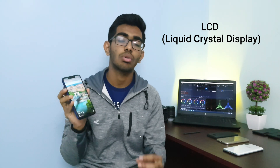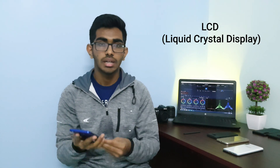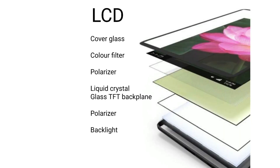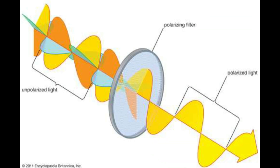LCD stands for liquid crystal display. An LCD display has a lot of layers stacked on top of each other. On the back there is a backlight that produces white LED light, which passes through the liquid crystals and a bunch of polarizers and filters, then finally reaches the color filter where the image is formed.